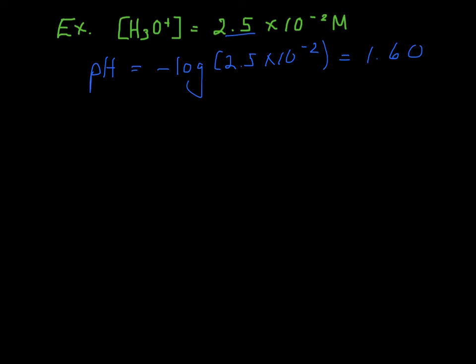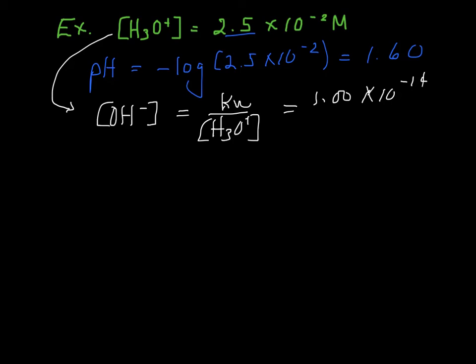But all aqueous solutions have hydronium ion and hydroxide. In water, the amounts are equal. In acidic solutions, you have more hydronium than hydroxide. And in basic solutions, you have more hydroxide than hydronium. But they're always present. So I can use the amount of hydronium ion to find hydroxide. From the expression we just learned, the hydroxide ion is Kw divided by the hydronium ion. And Kw is a constant, so we know it. It's 1.00 times 10 to the minus 14. So we'll divide that by the hydronium ion concentration, 2.5 times 10 to the minus 2.